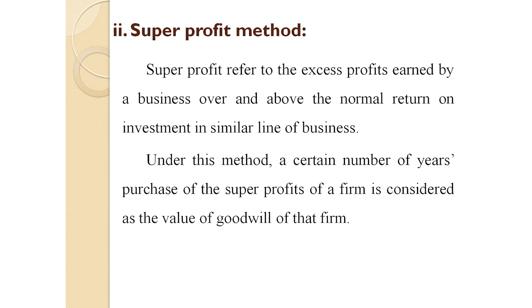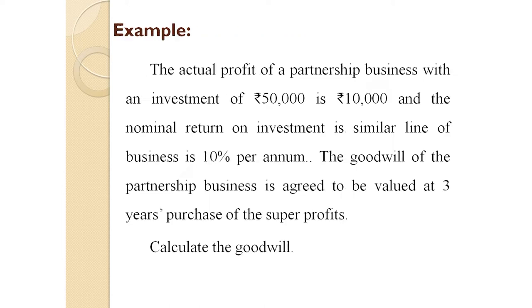The second method is the Super Profit Method. Super profit refers to the excess profit earned by the business over and above the normal return on investment in a similar line of business. Under this method, a certain number of years' purchase of the super profit is taken as the value of goodwill. Example: the actual profit of the partnership business with an investment of ₹50,000 is ₹10,000, and the normal rate of return in a similar line of business is 10% per annum. Goodwill is to be valued at three years' purchase of super profit.